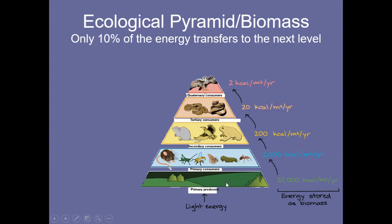Not all the energy at one level actually makes it up to the next level. Only 10% of the energy stored in the grasses or plant life actually gets used by the animal above it. That's all that's transferred up — the rest is lost to heat. Most of it is lost to heat because these animals give off a lot of heat. As energy moves up the chain, only 10% actually transfers to the next level.